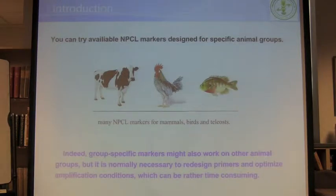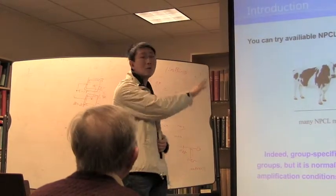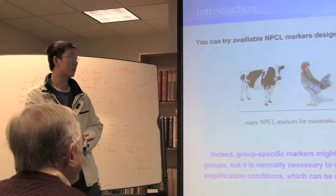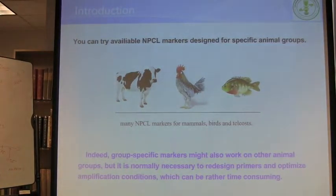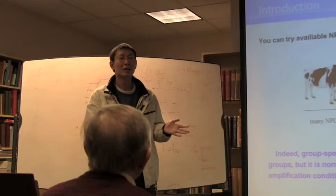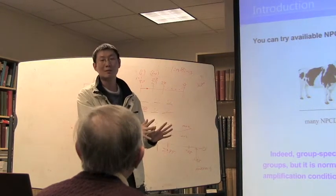One strategy is to try available NPCR markers of other animal groups. Like mammals — they have a large number of NPCR markers already available — and birds and reptiles also. You may try these markers in amphibians and reptiles, but normally it fails because group-specific markers might fail due to primer problems. You need to redesign primers sometimes and optimize PCR conditions. It's very time-consuming. Many people doing nuclear work in amphibians and reptiles always get smear bands or faint bands or no bands. So we really need specific markers just for amphibians and reptiles. That's our goal.